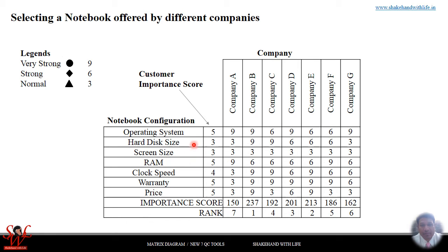And here are the company names: Company A, Company B, Company C, D, E, F, and G.